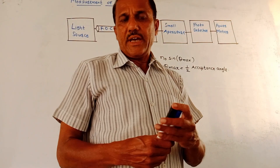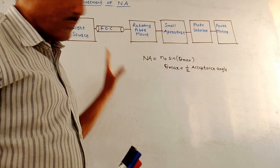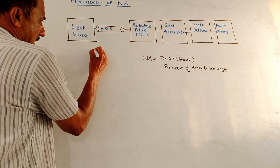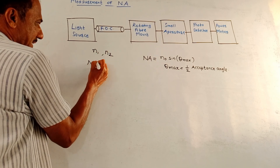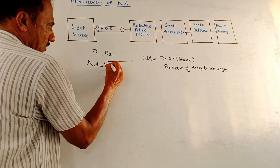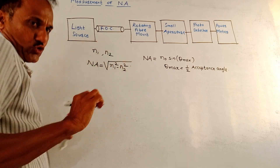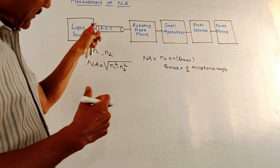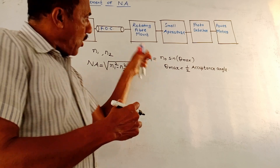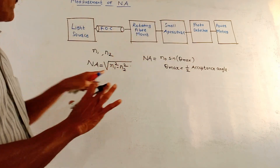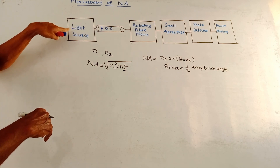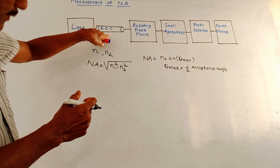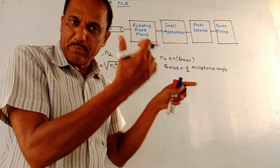The next part is measurement of NA, that is numerical aperture of an optical cable. If we know the refractive indices of the media — suppose we have the values of N1 and N2 — then the numerical aperture NA can be directly calculated using the formula: square root of (N1 squared minus N2 squared). This is possible if you know the refractive indices of the material. Apart from this, this setup gives us an idea of how to measure the numerical aperture experimentally. At the input side we make use of a light source — it can be an LED or a laser; usually LEDs are preferred.